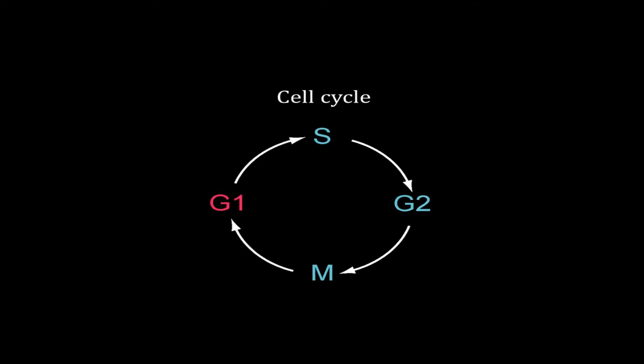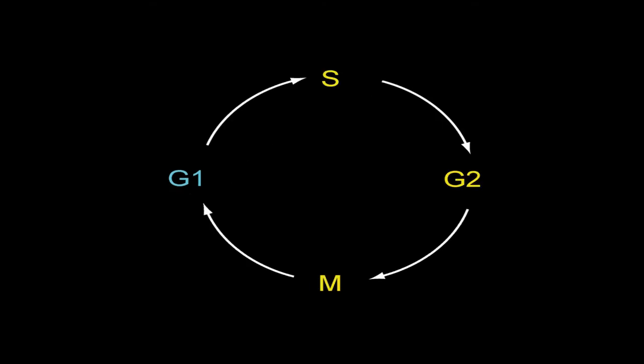In G1, the cell duplicates its cellular machinery, copies organelles, and increases size. DNA replication happens in the S phase. S phase is followed by the G2 phase where the cell gets ready for mitosis. For simplification, we will consider S, G2, and M phases as one single phase. In G1 phase, the cell decides to move forward into the S phase.